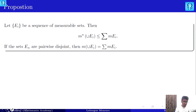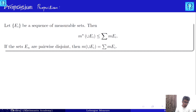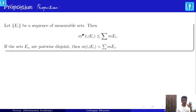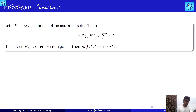We prove these as propositions. There is a typo — let me correct it. The proposition states: if E_i is a collection, a sequence of measurable sets, then we have to prove m-star of union E_i is smaller than or equal to the summation of m(E_i). Since they are measurable sets, the outer measure is called the Lebesgue measure. Let us start the proof formally.